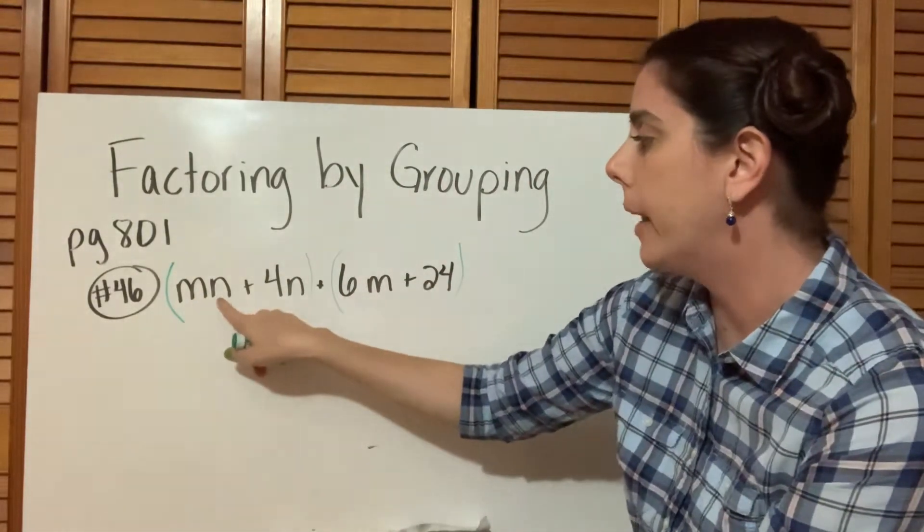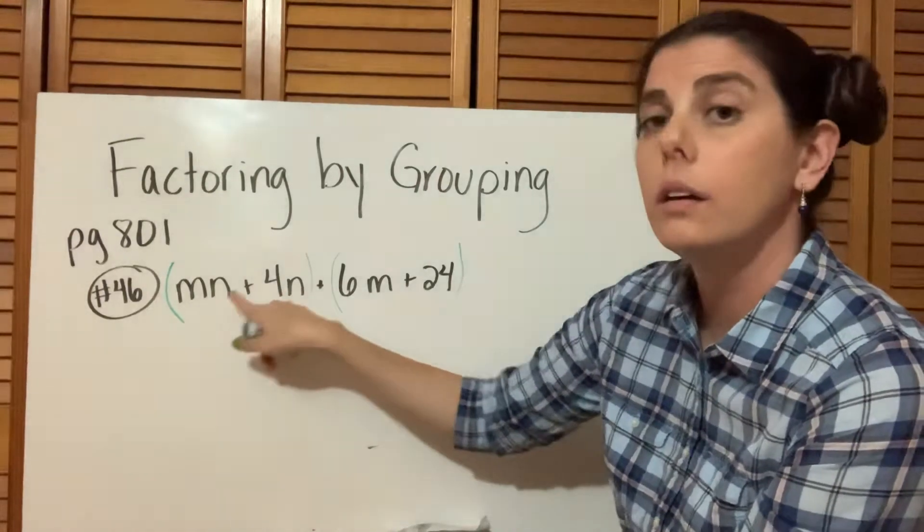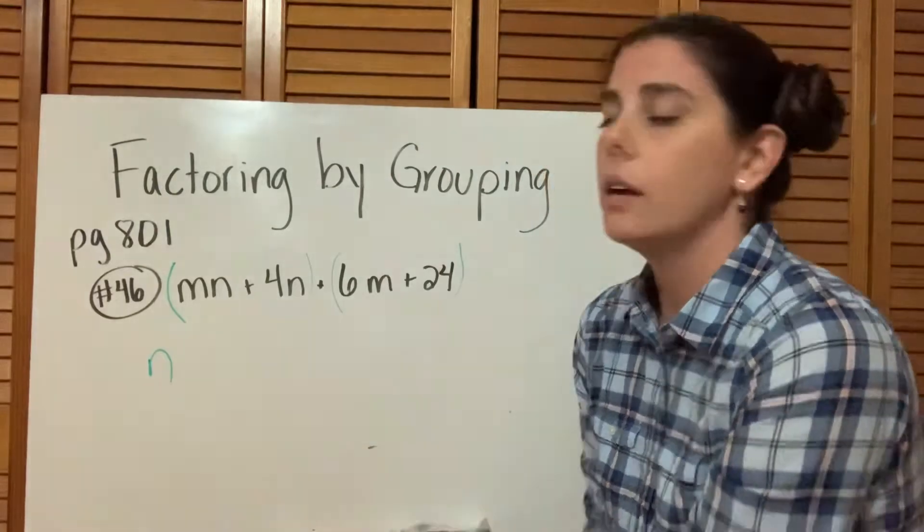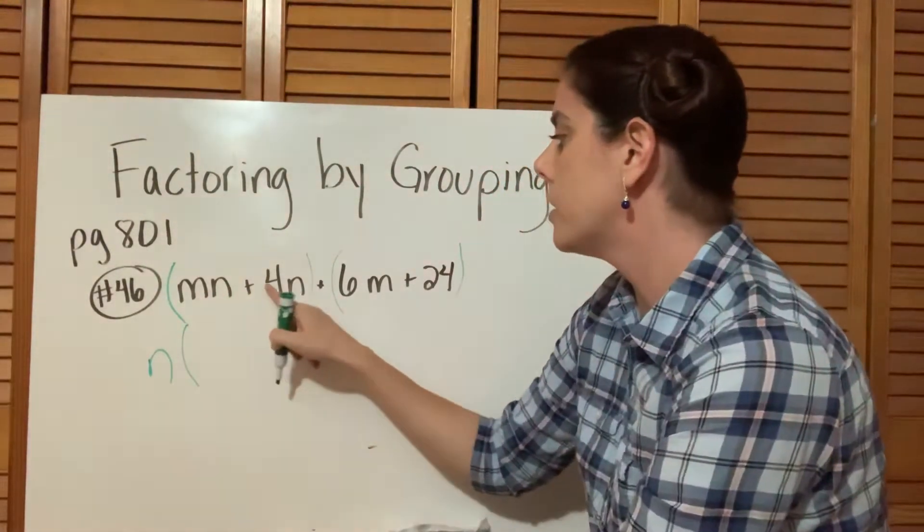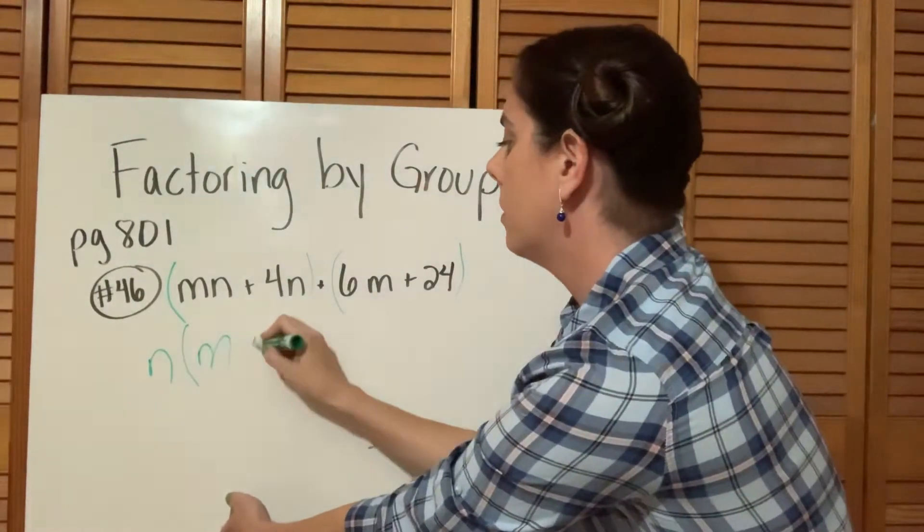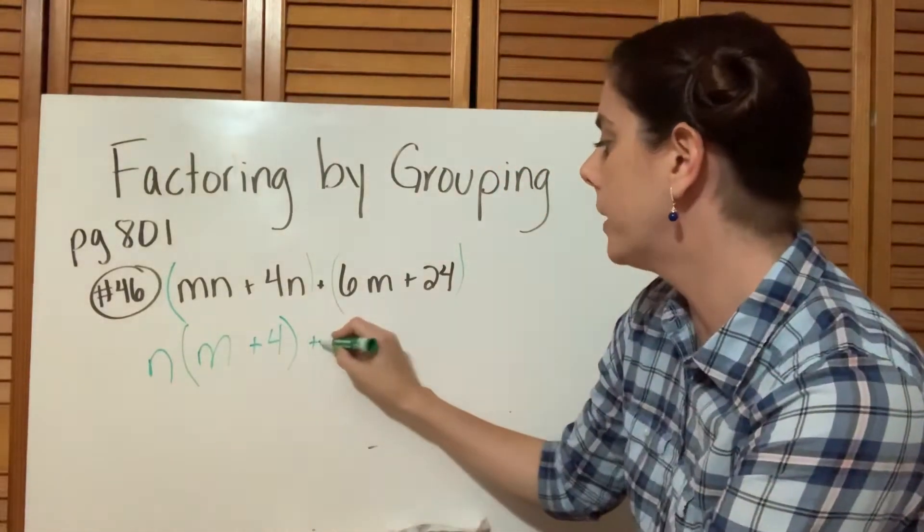If we look at MN plus 4N, we can see there's an N in both of those terms, correct? So N would be our GCF. What would be left over? M plus 4, because we took out the N from each term. So we'd have N times (M plus 4).